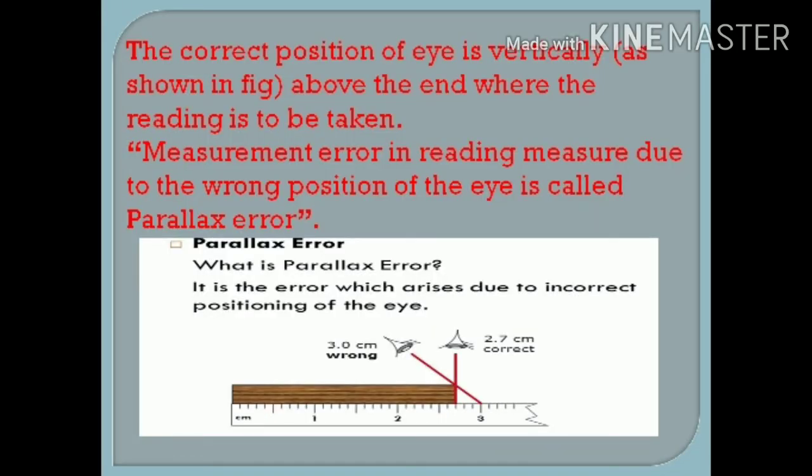Now if we take measurement from the incorrect position of an eye, then measurement comes out to be wrong. Then what is the correct position of eye for taking accurate measurement? The correct position of eye is vertically above the end where reading is to be taken. Now look at the picture.